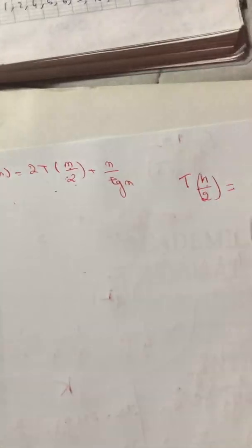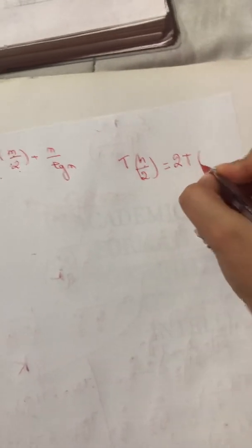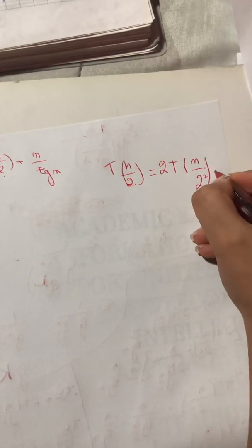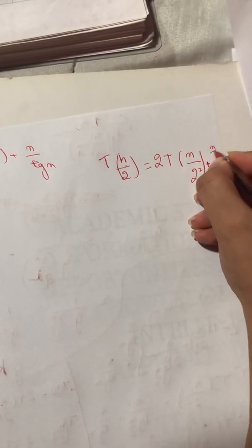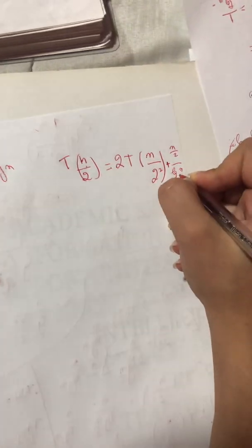So the equation becomes 2T(n/2)^2 plus n/2 log(n/2). So this is the first time.